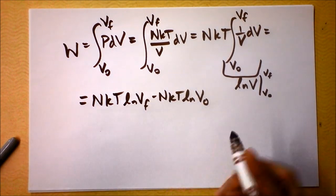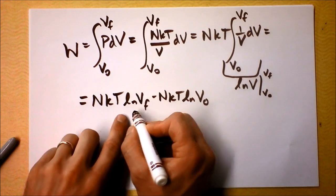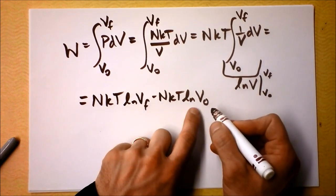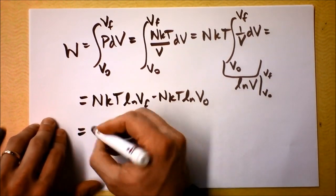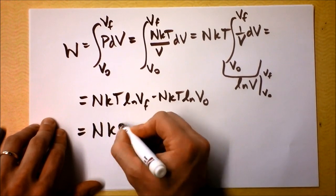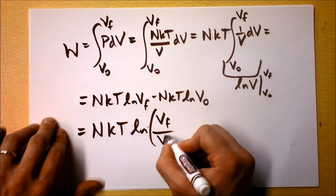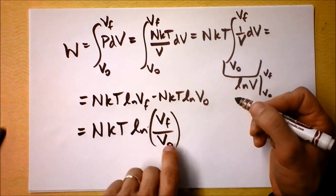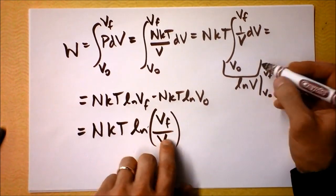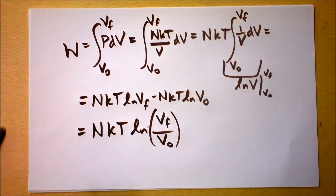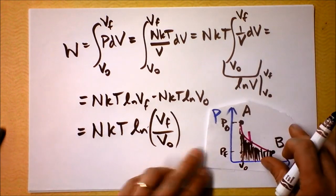Can I clean that up a little bit? What if I have natural log of one thing minus the natural log of another thing? You know what that is. That's NKT times the natural log of the ratio of the two of them. So we're talking about natural logging the ratio of the two volumes, the initial volume and the final volume. That is the work that's done.